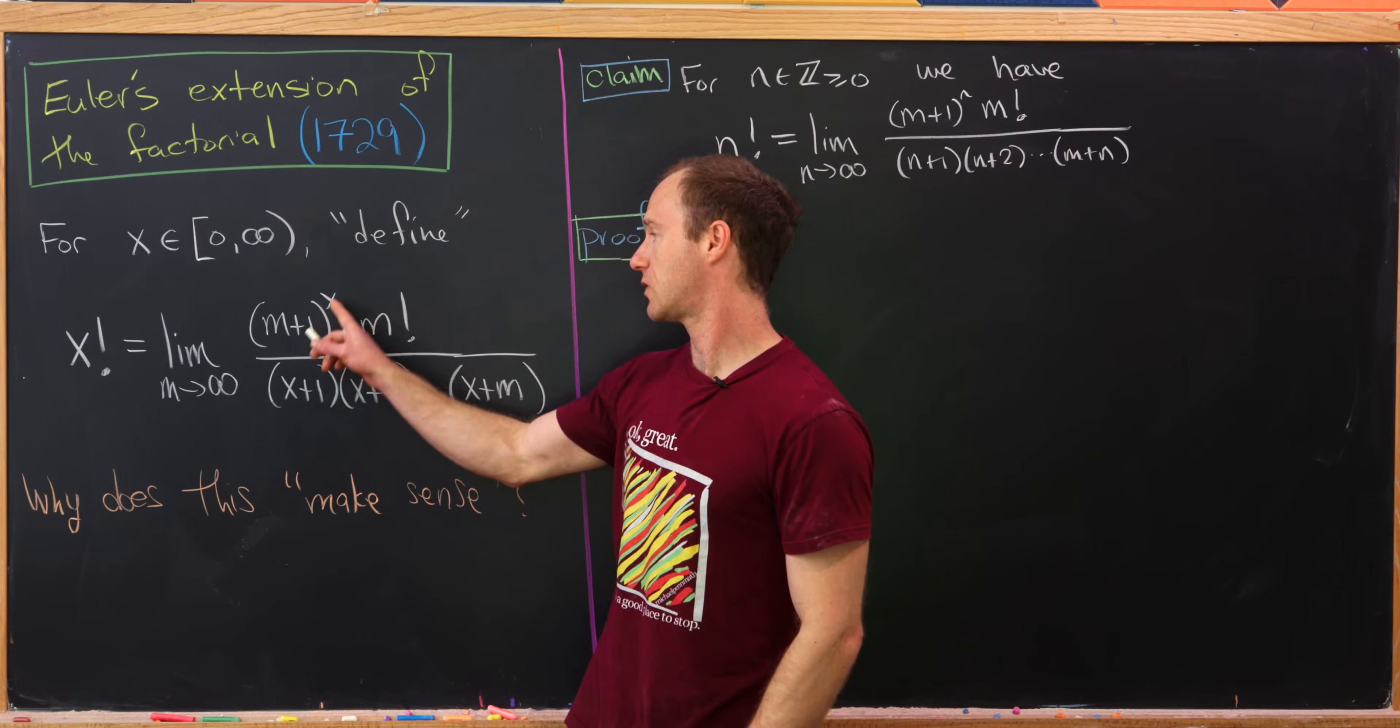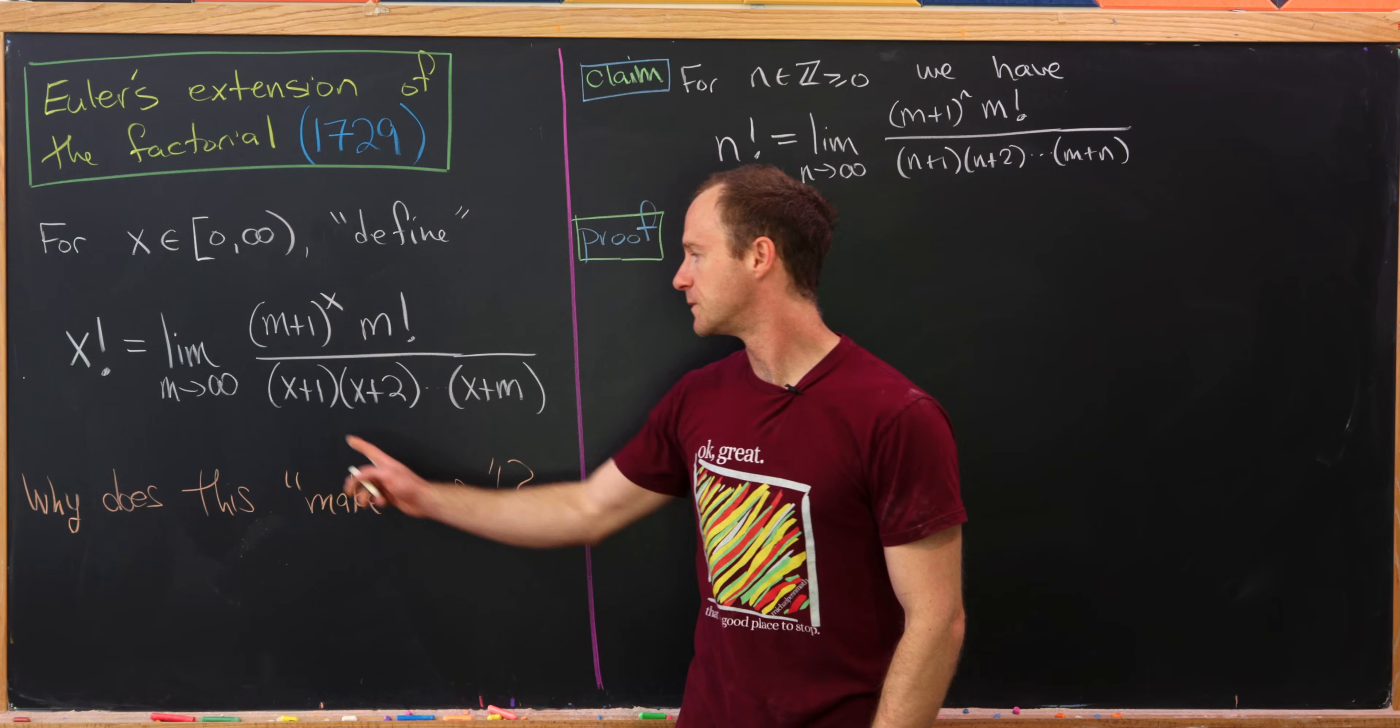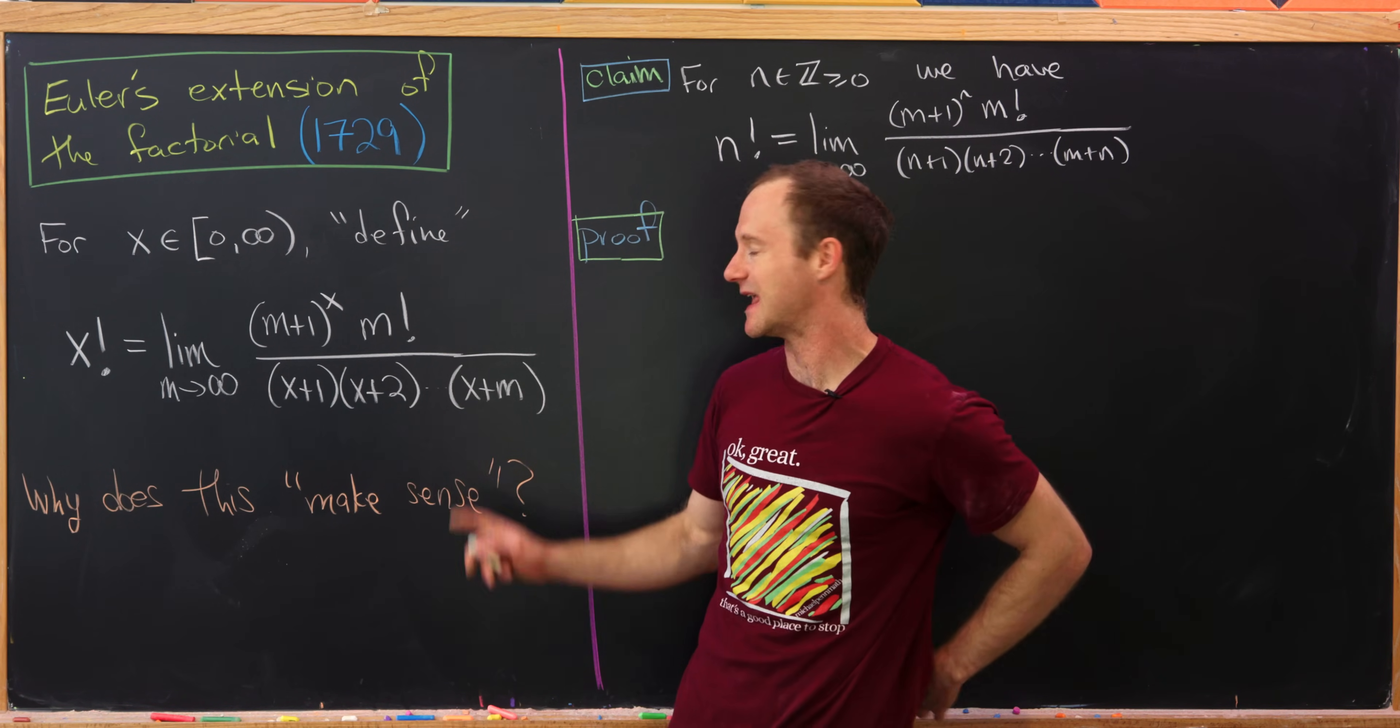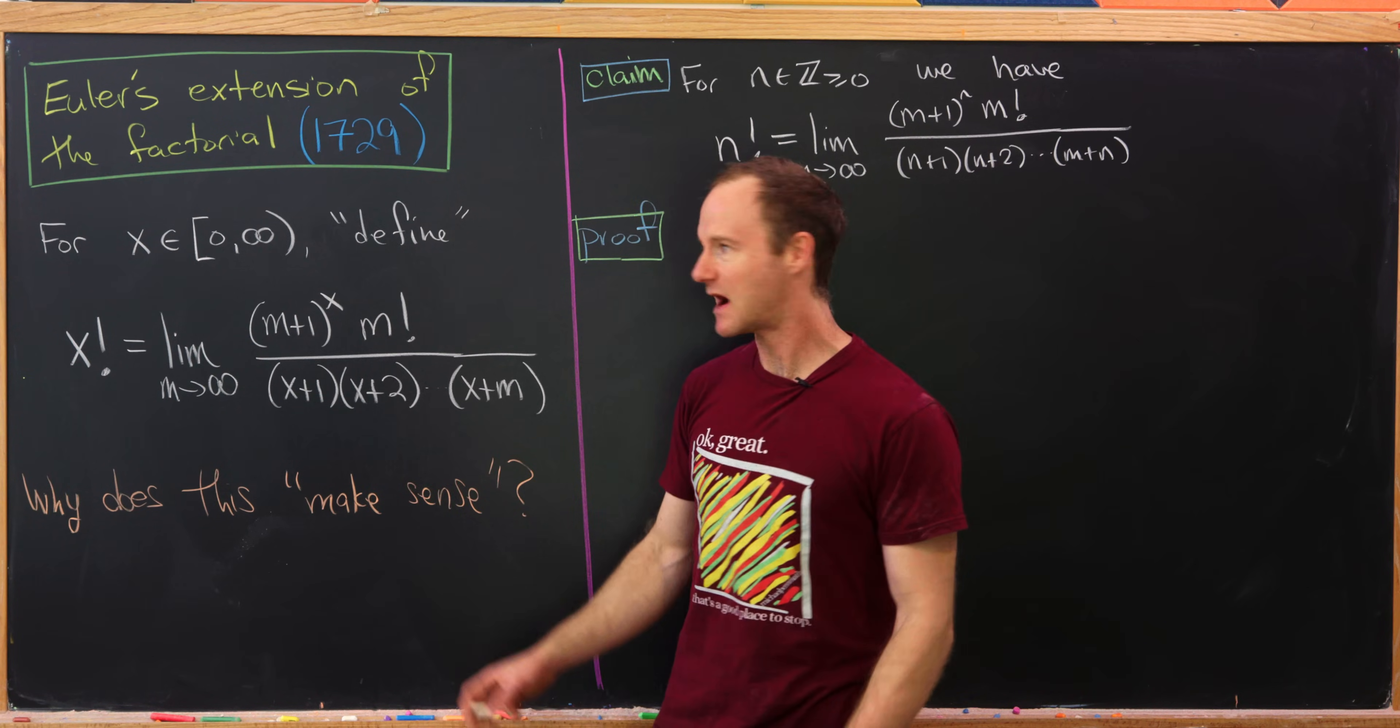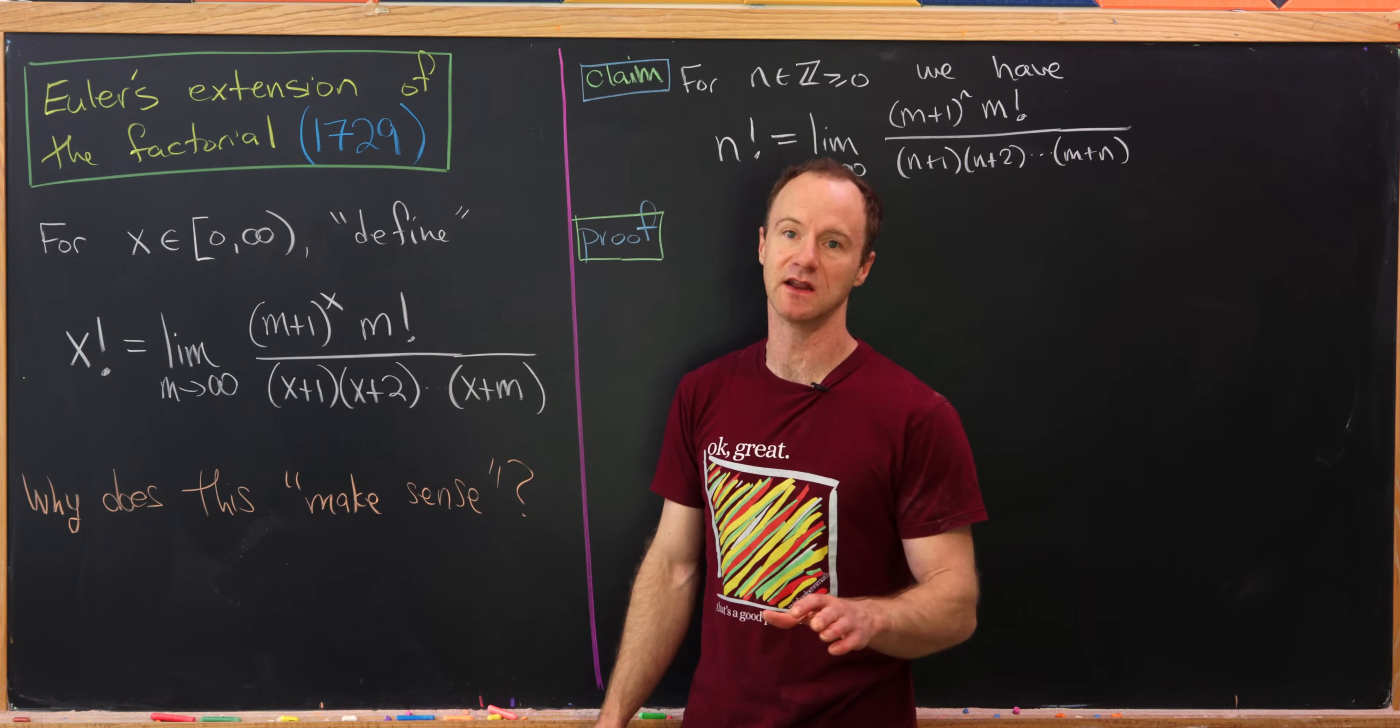infinity of (m+1)^x times m factorial over this rising product (x+1) times (x+2) ending at (x+m).